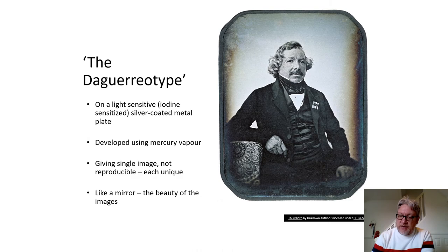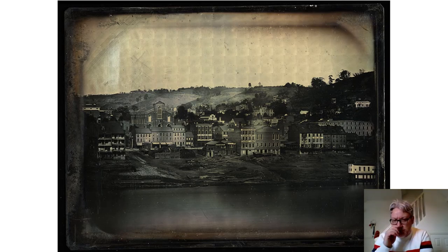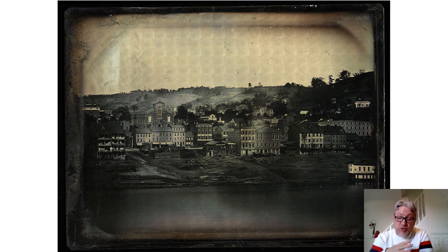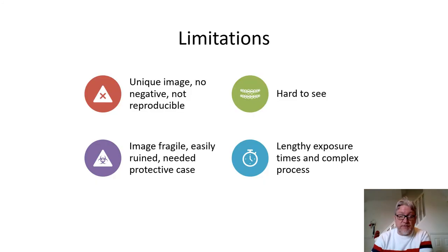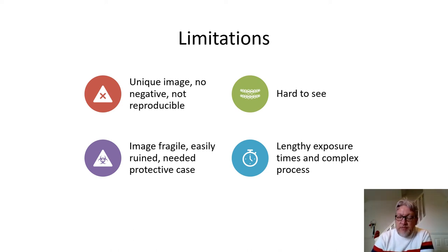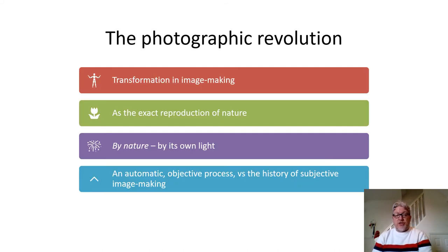This is the sort of thing a daguerreotype could produce — there's detail in the image, hues of colour, though obviously not in full colour. It's a big step forward from that grainy old View at Le Gras. But huge limitations: it's a unique image, no negative is produced so it's not reproducible, the image was fragile and very easily ruined — you needed a protective case. Although we were down from eight hours, there were still lengthy exposure times and a very complex process requiring expert chemistry knowledge. But you're starting to see the transformation in image making — exact reproductions of nature using natural light, an automatic objective process versus the subjective image making of drawing.